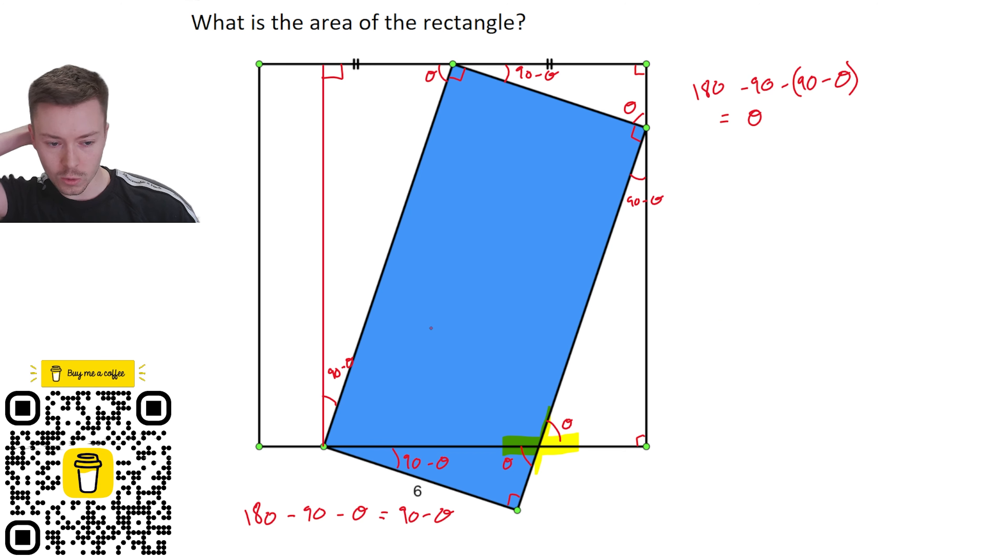Now that's all my angles kind of labeled up, I need to think about how I could maybe label some sides and how that might help me. Now the width of the rectangle is six so the width of the top of this rectangle must also be six. So then that is going to help me with this triangle. Maybe I've got some length there at least which may help.